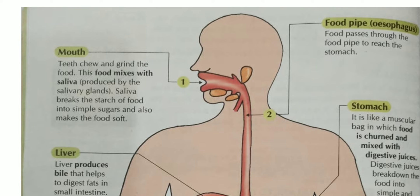What happens in the mouth? What changes take place inside the mouth? The first change: teeth chew and grind the food, breaking it down into small pieces. The second change: our mouth has glands called salivary glands. The food mixes with saliva produced by the salivary glands.